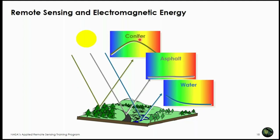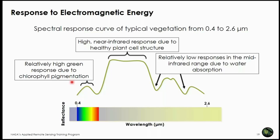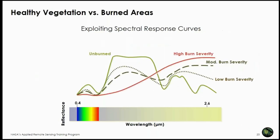In the visual spectrum, one spectral response peak results from chlorophyll pigmentation. There is also a peak in the mid-infrared due to healthy plants and how energy reflects off them. Two additional mid-infrared peaks are due to water absorption in healthy plants. By exploiting these spectral curves, we can see the difference between healthy vegetation and burned areas — looking toward the mid-infrared you start to see peaks differing in intensity at the low, moderate, and high severity levels.